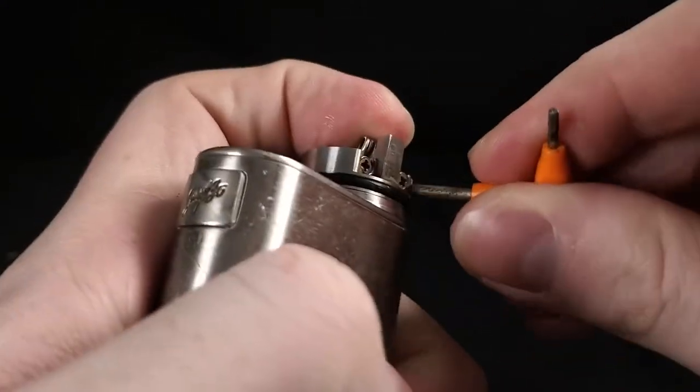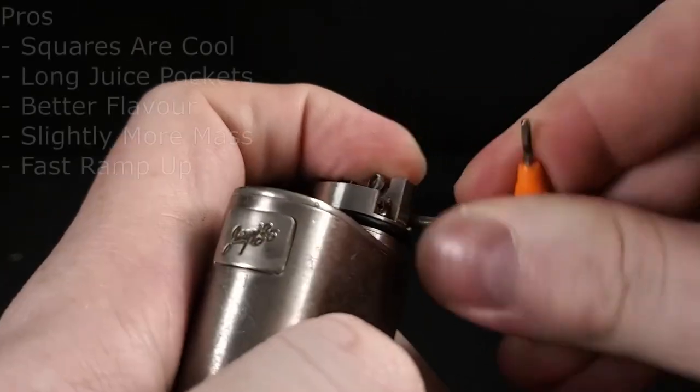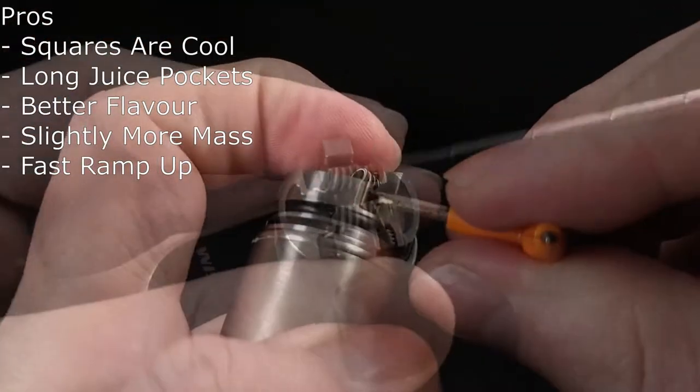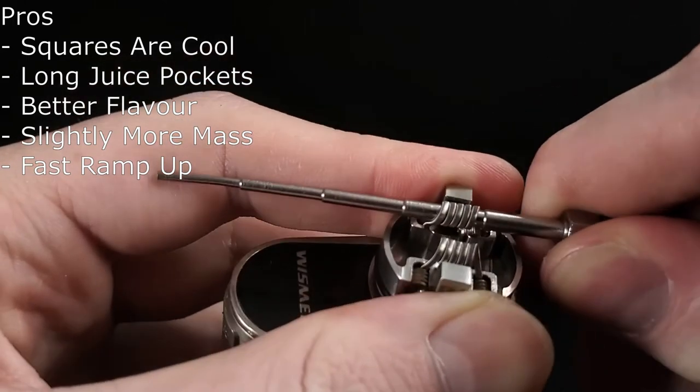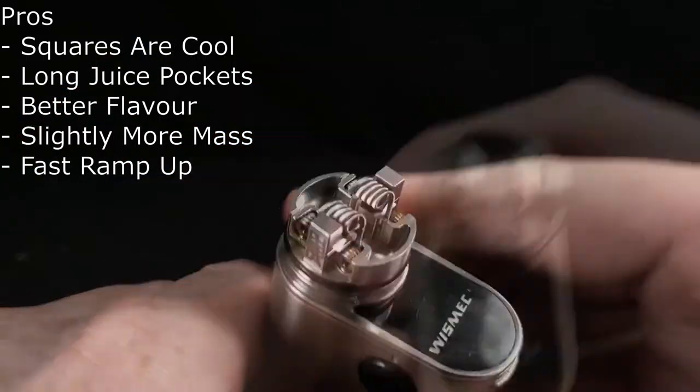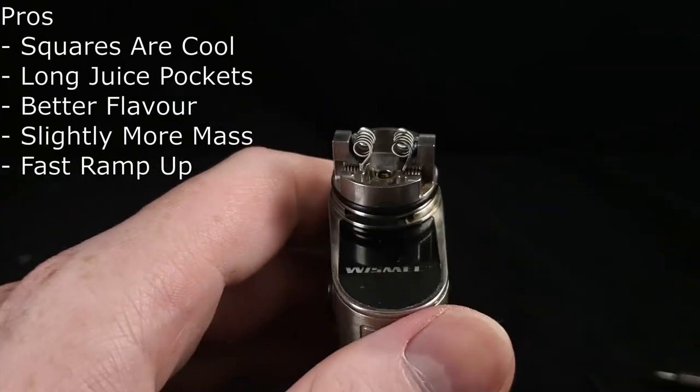The pros and cons for this coil are very much similar to the fused clapton. The only real difference being that instead of a very rounded oval shape as a profile, it is much more square. That's kind of the point of the coil. It looks like a line of staples and such is named.